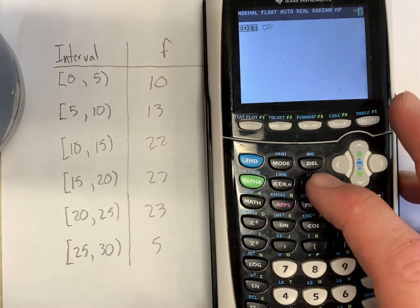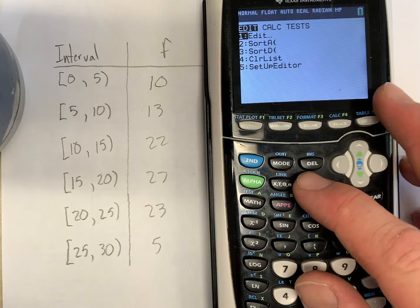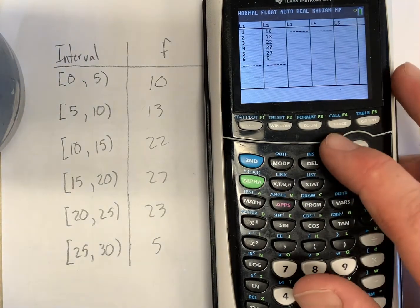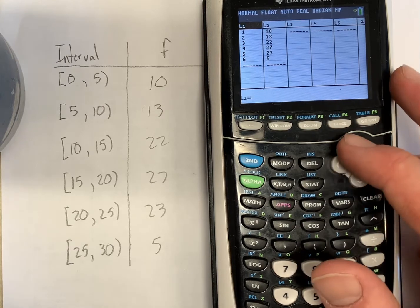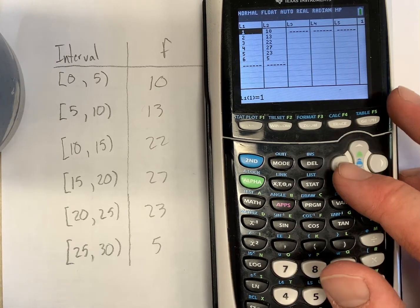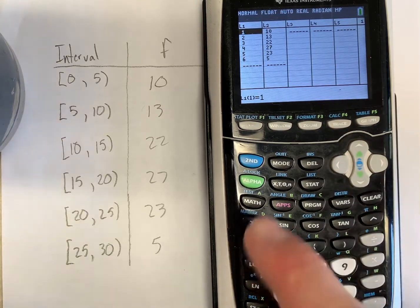So let's go ahead and make a stat list. So we'll go by pressing stat and go into our edit. You can see I've got some of this data copied in already, but instead of L1 being our actual L1 values, I'm going to do our mid-interval values.